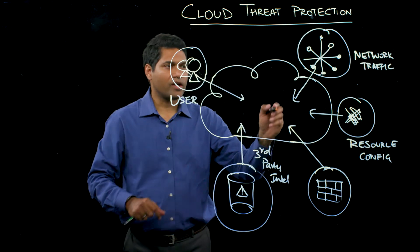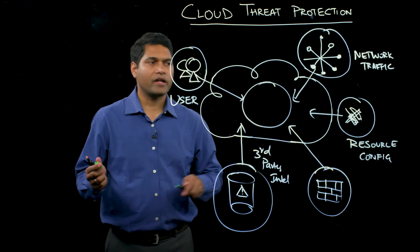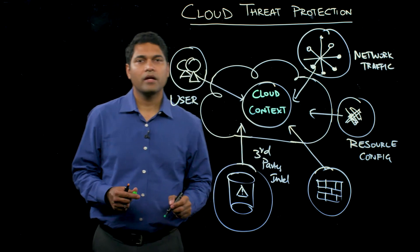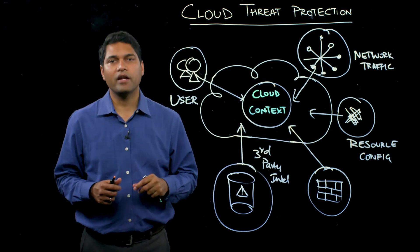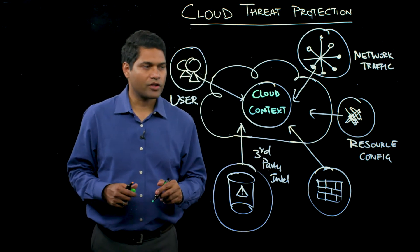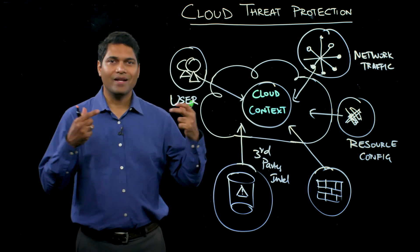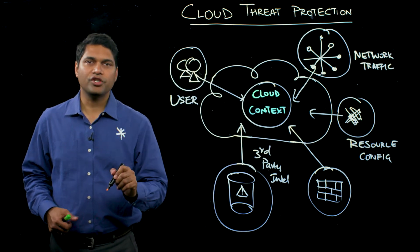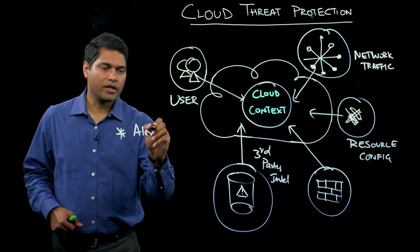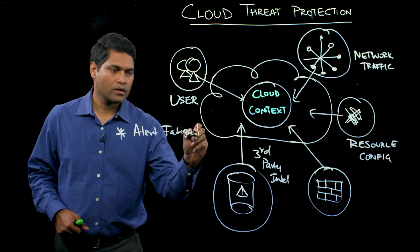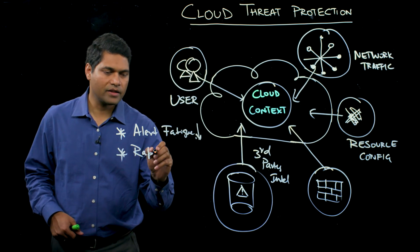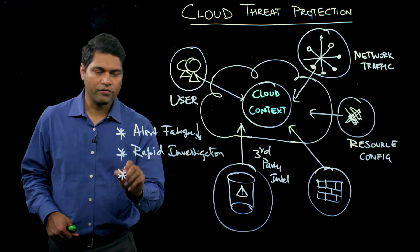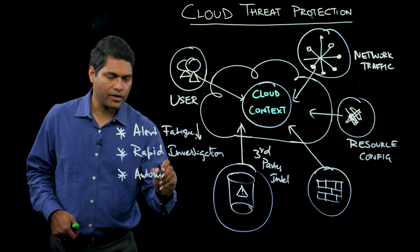Once you have all this information tied together, what you are actually achieving is context — context which is very specific to cloud. This context is crucial for you to define the right kind of security protections in place for your cloud infrastructure. Once you have that context, you can leverage it to essentially do prevention, detection, and response. Some of the key outcomes you can achieve are: one, you can decrease alert fatigue; two, you can actually rapidly investigate incidents, effectively leading to faster time for detection; and finally, you can trigger automated response.